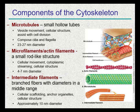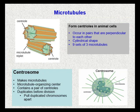Microtubules form centrioles in animal cells. Centrioles occur in pairs that are perpendicular to one another and create a cylindrical shape. Within a centriole, you will find 9 sets of 3 microtubules arranged in that pattern. A centrosome is the microtubule organizing center of an animal cell — they make microtubules and control where they go. A centrosome is composed of a pair of centrioles, will duplicate before division, and will act as the motor that pulls duplicated chromosomes apart.